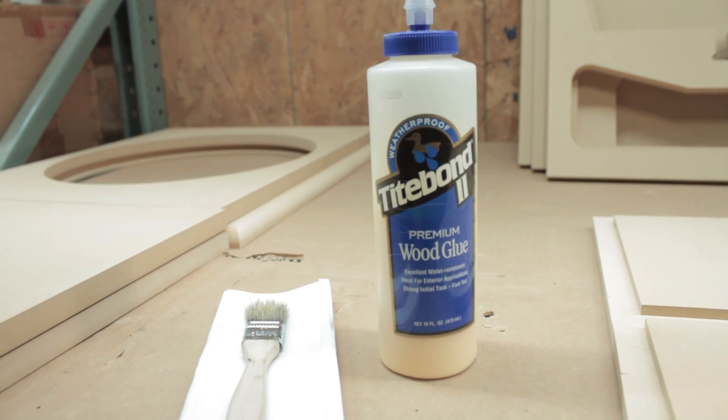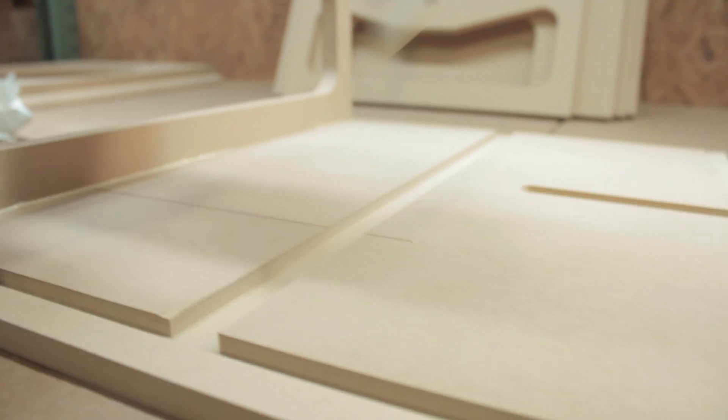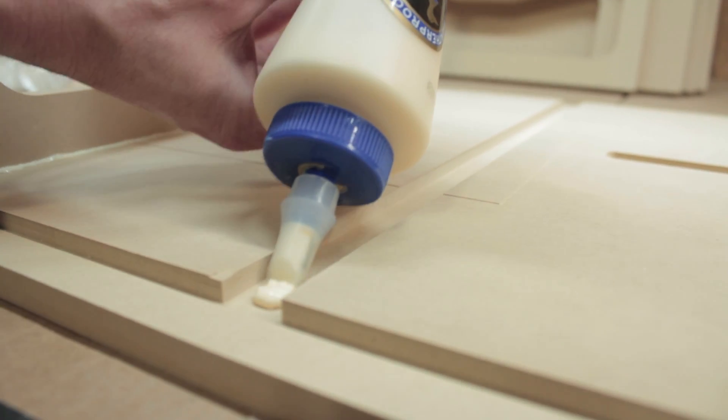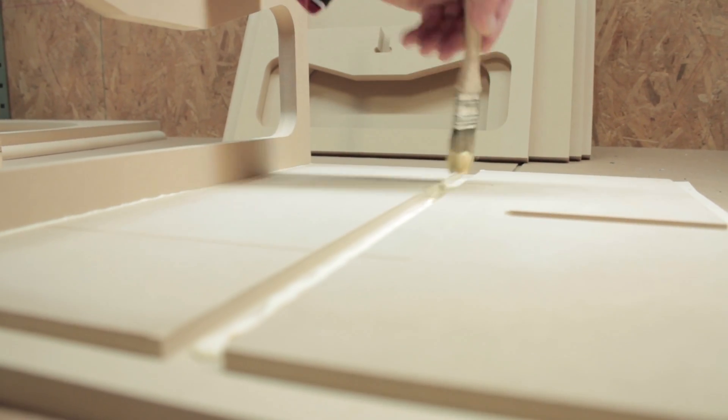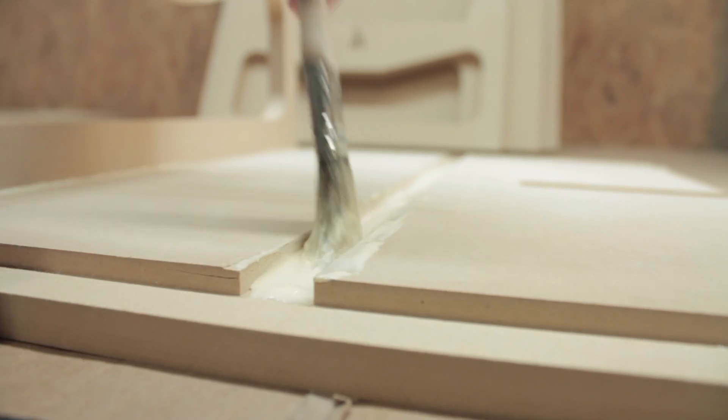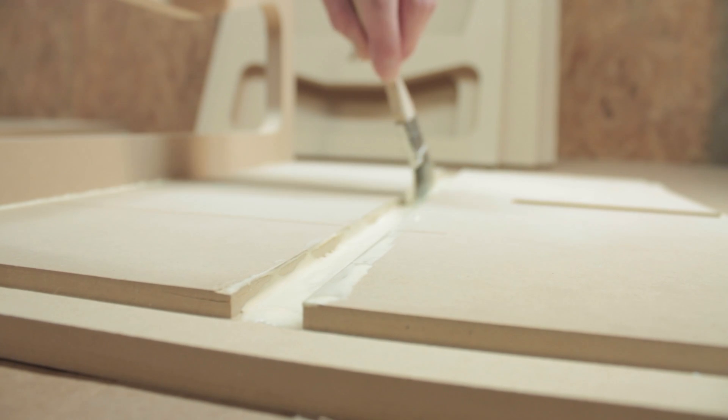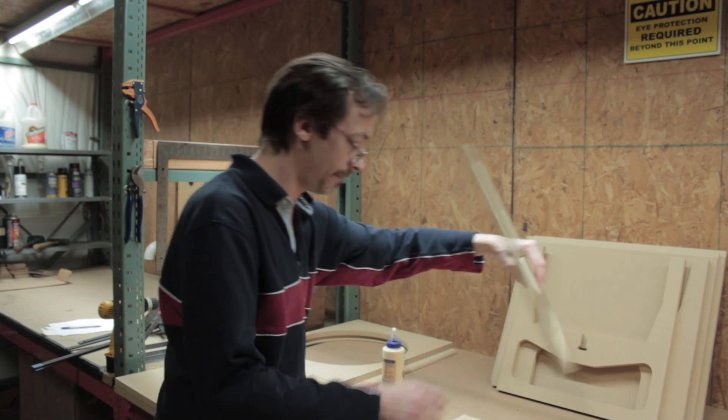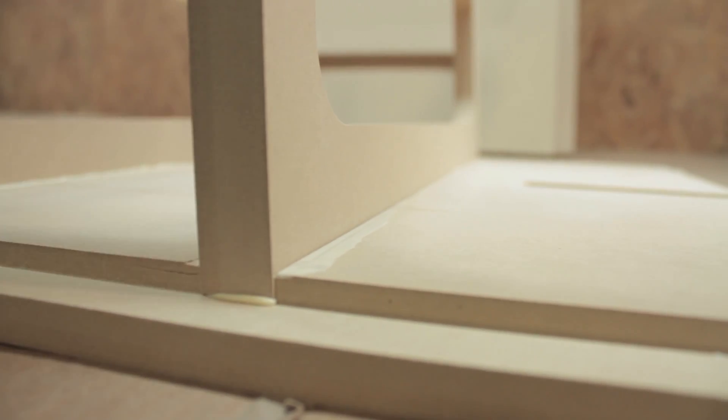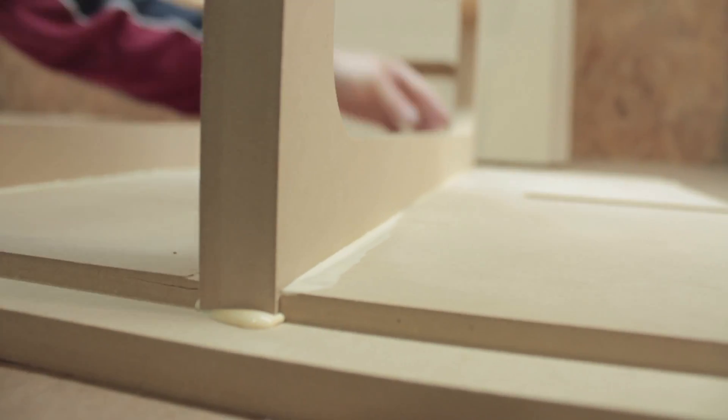We're going to go ahead and start the glue up. I usually lay down a pretty heavy bead of glue, especially on parts like this where you can't see it on the inside. I like to spread the glue out a little bit with the brush, kind of keeps your squeeze out under control. Brush away from these outside dados, you don't want to get any glue in that area at this point. Just set the piece in place.